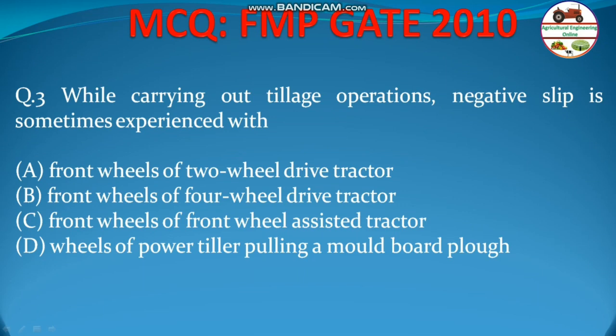Negative slip means the wheel moves forward without rotating — that only happens for a braked or towed wheel. So a towed or braked wheel generally skids, and negative slip occurs. The front wheel of a two-wheel drive tractor is a towed wheel because power is not given to it.